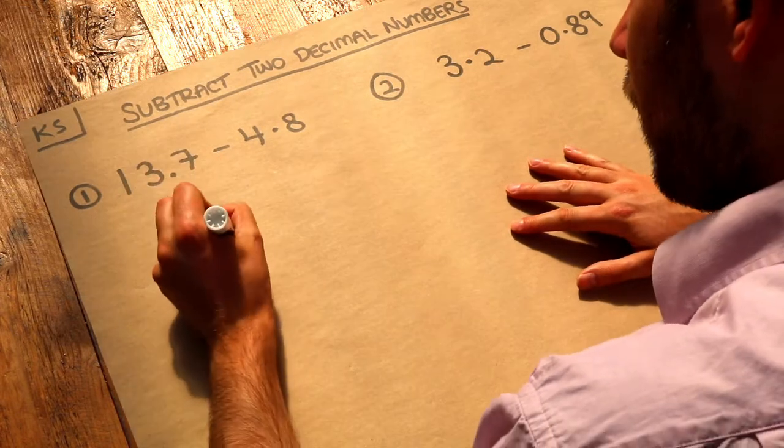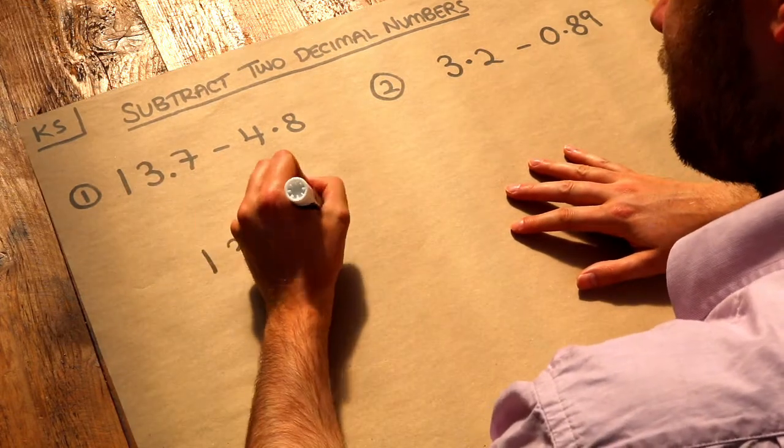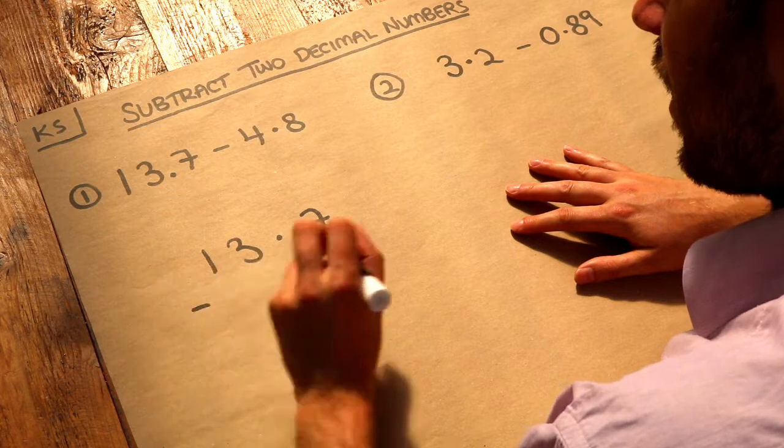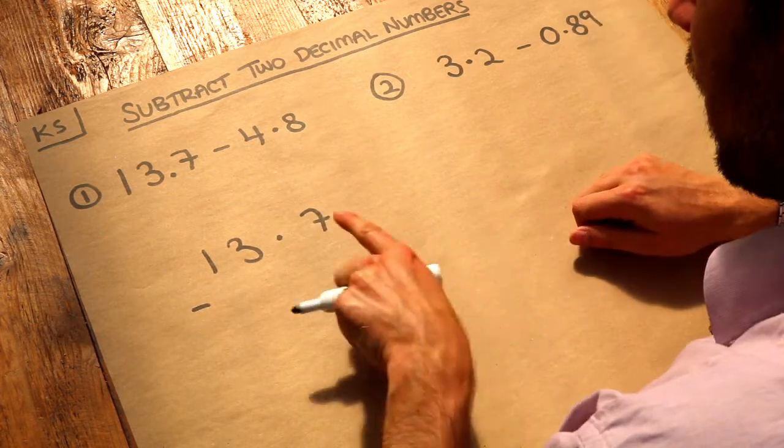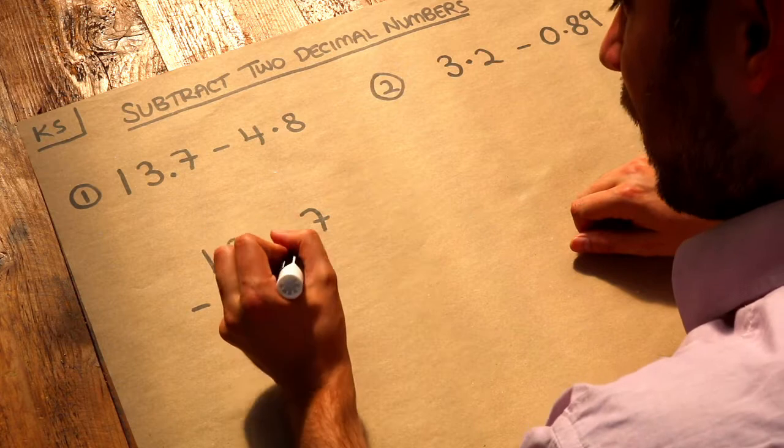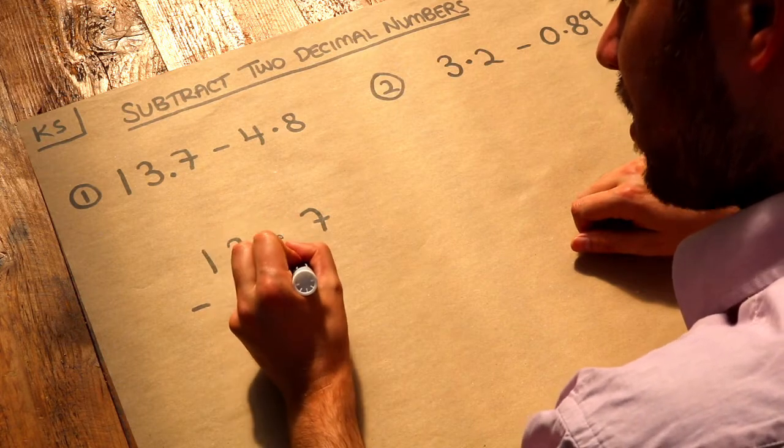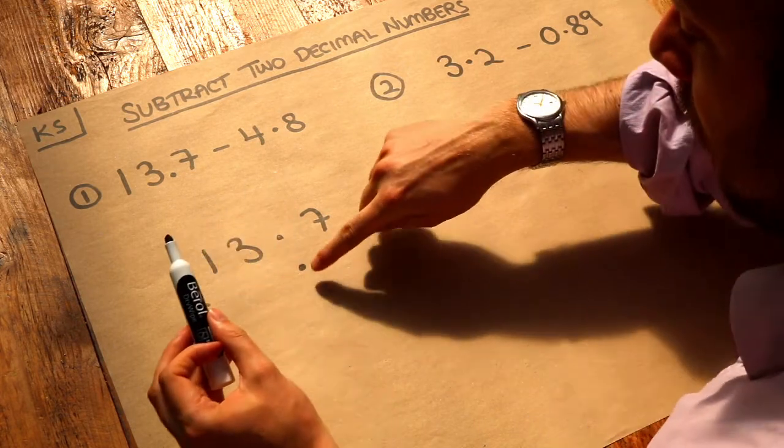Let's do that. We've got 13.7 and I want to subtract 4.8. I have to make sure everything with the same place value is in the same column, and the easy way to achieve that is to make sure that the decimal points are in the same place vertically.